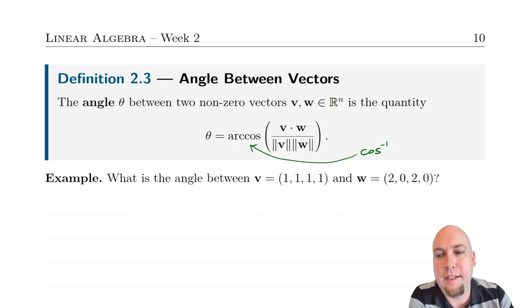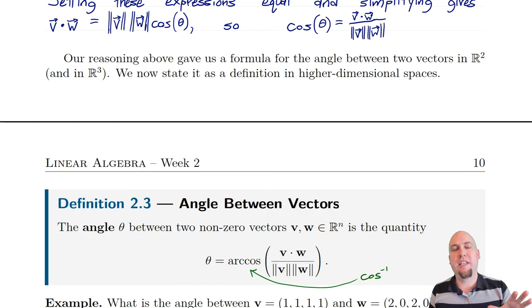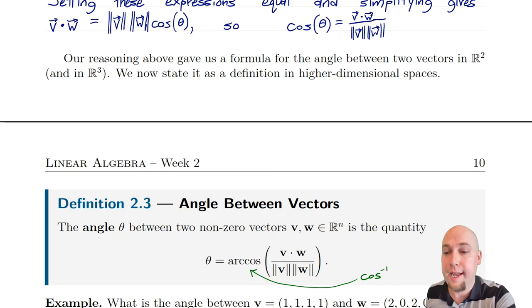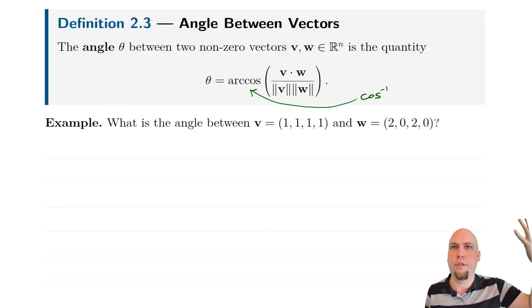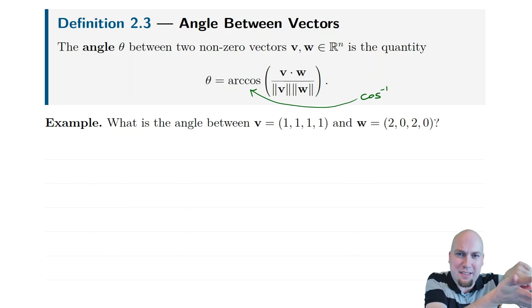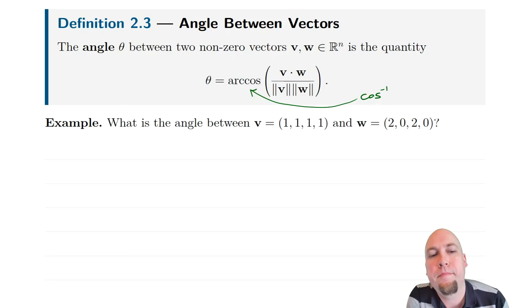This definition is just another way of writing down the formula we derived above. We proved this formula holds in the two-dimensional case, and now we're defining it in higher dimensional cases, because we don't have an intrinsic understanding of what angles mean in higher dimensional spaces. If you were asked before today what is the angle between two vectors in six-dimensional space, you couldn't picture them, so we didn't even have a notion of what angles meant. Now we do — it's a theorem in two and three dimensions, and a definition in higher dimensions.